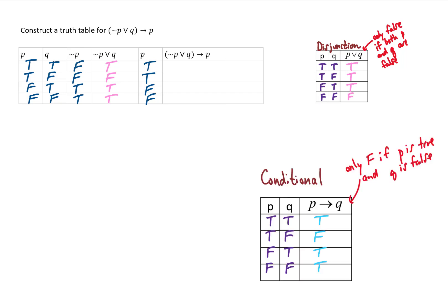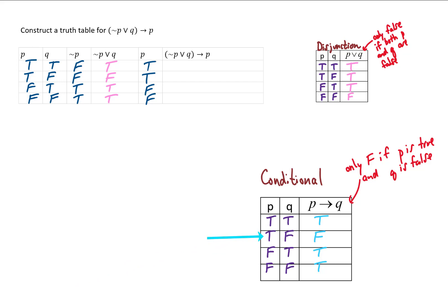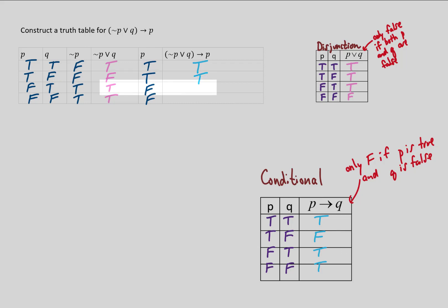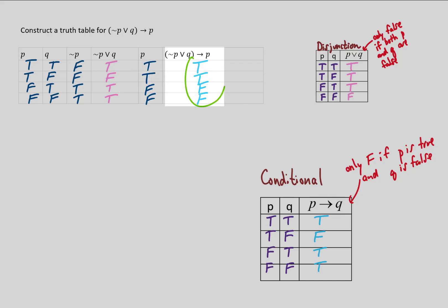The conditional table from the previous video tells us we only get false if our first truth value is true and our second truth value is false. Comparing the two columns: true and true gives true; false and true gives true; true and false gives false; and true and false gives false. So our answer column in this case looks like this.